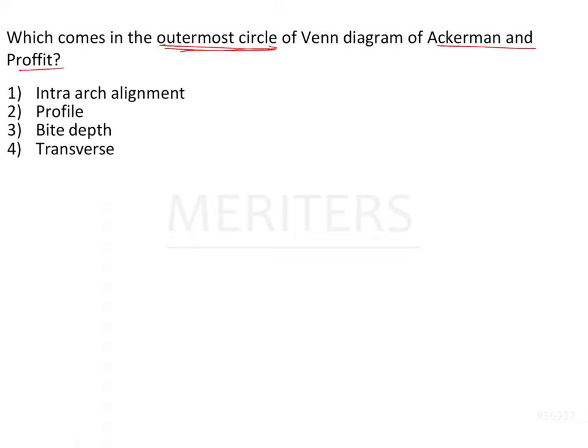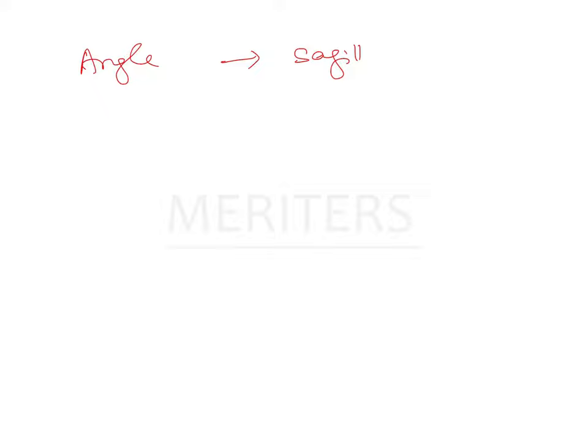The first system of classification of malocclusion was given by Angle, who classified malocclusion in the sagittal plane of space using the maxillary and mandibular permanent molars as the key to classifying the malocclusion. There were various limitations to this type of classification because it considered the malocclusion only in one plane of space — that is the sagittal.